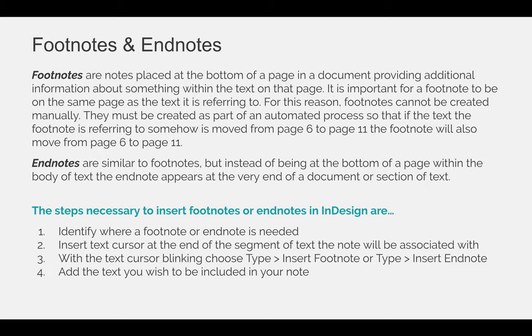Endnotes are similar to footnotes, but instead of appearing at the bottom of a page within the body of text, the endnote appears at the very end of a document or section. It still needs to be automated because it will automatically indicate what page the referenced text is on — you don't want someone to have to figure out whether it's on page 306 or 219. So endnotes need to be linked to the text as well.